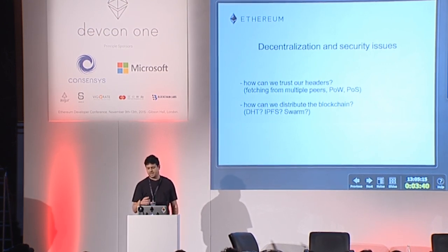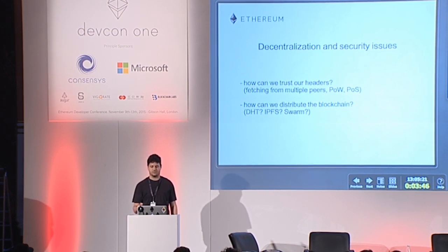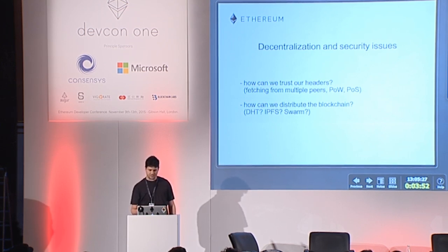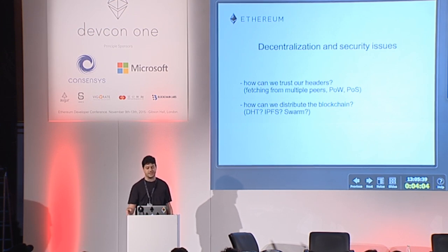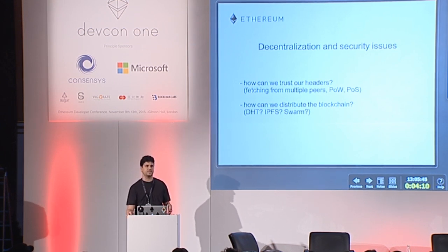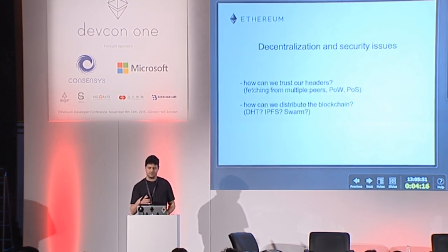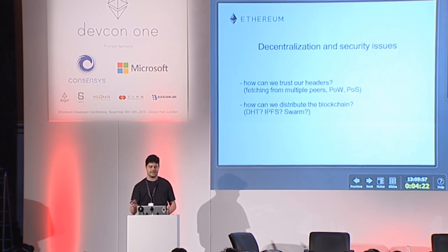But as we are not processing the blocks, we cannot directly check the validity of the headers, so we definitely need some security measures to prevent attacks. One obvious way is checking the proof of work and later proof of stake found in the block headers, which makes it harder and more expensive to forge false blocks or headers. Proof of stake will definitely provide a better level of security, but proof of work will also be sufficient, and we can increase its security if we demand a few confirmations before we accept each header.